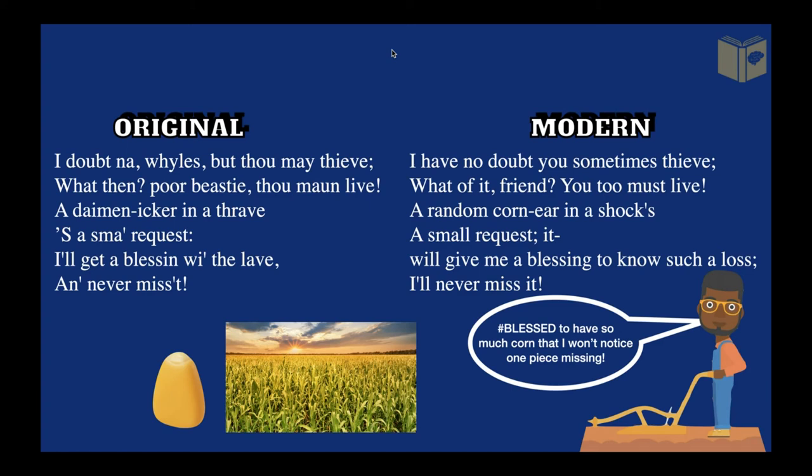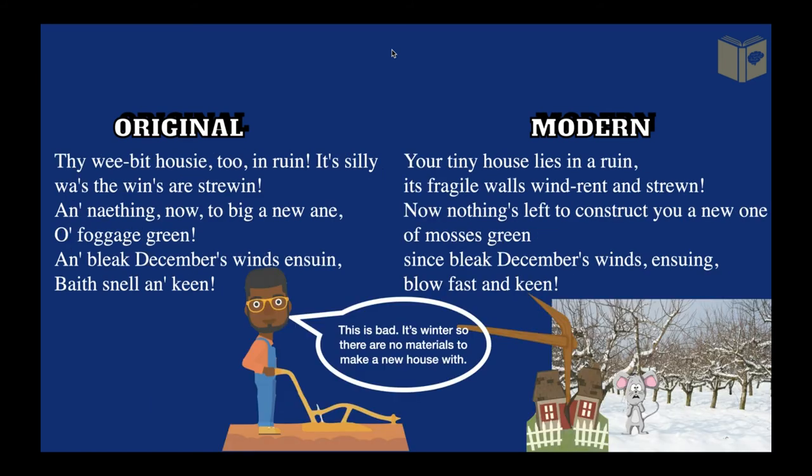In the third stanza he's saying: I understand that you have to steal sometimes from my farm, but that's part of life. You steal a little bit of corn — I've got a whole field of corn. I'm 'hashtag blessed' to have so much that I wouldn't even notice one piece missing. It's all part of respecting one another and not being selfish.